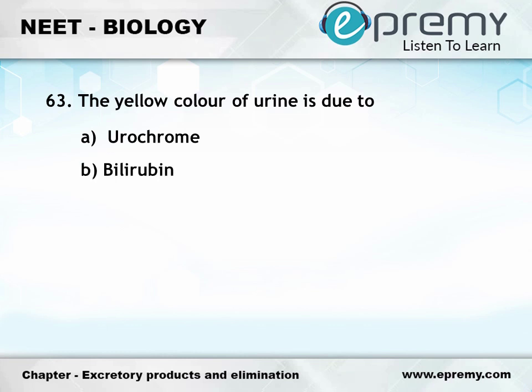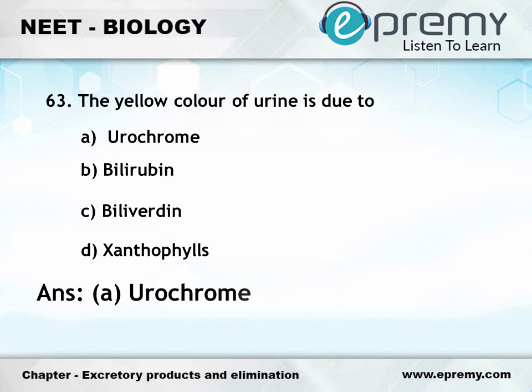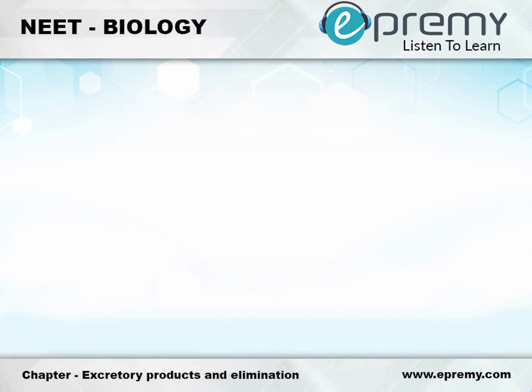Question number 63: The yellow colour of urine is due to — Option A: Urochrome, Option B: Bilirubin, Option C: Biliverdin, Option D: Xanthophyll. The answer is Option A: Urochrome.